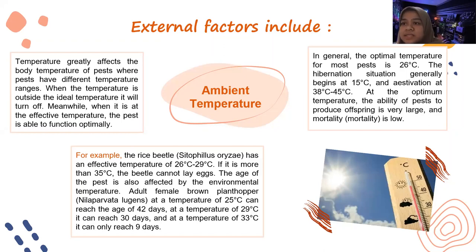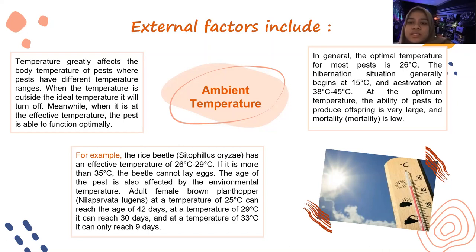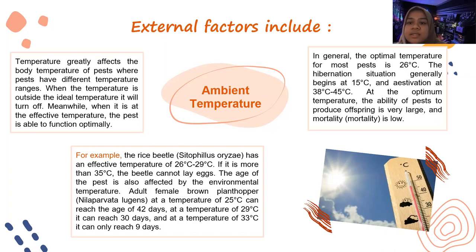The hibernation situation generally begins at 50 degrees. At the optimum temperature, the ability of pests to produce offspring is very large and mortality is low. For example, the rice beetle Cytopus oryzae has an effective temperature of 26 to 29 degrees. If it is more than 35 degrees, the beetle cannot lay eggs. The age of the pest is also affected by environmental temperature. Adult female brown planthopper Nilaparvata lugens at 25 degrees can reach an age of 42 days, at 29 degrees it can reach 30 days, and at 33 degrees it can only reach 9 days.